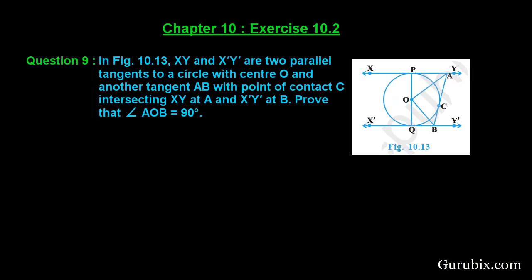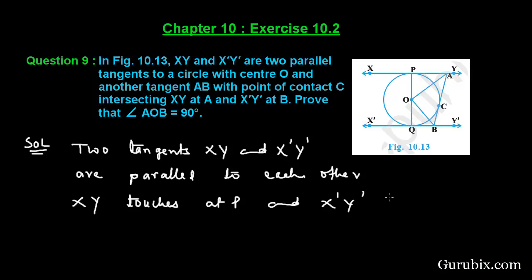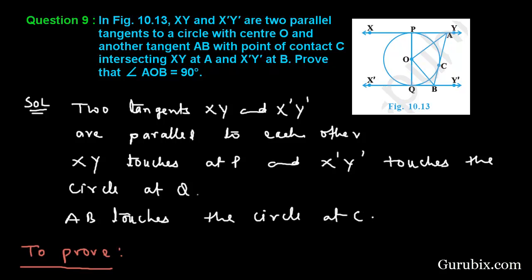This is a very important question. Let us solve it systematically. First of all, we shall collect what is given to us. We are given that two tangents XY and X'Y' are parallel to each other, where XY touches the circle at P and X'Y' touches the circle at Q. We have another tangent AB which touches the circle at C, and we have to prove that angle AOB equals 90 degrees.